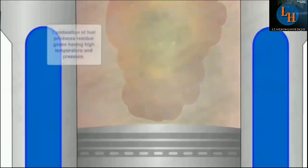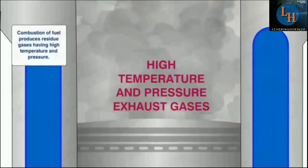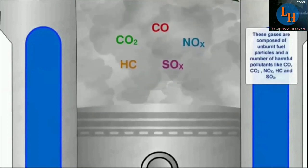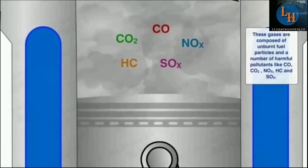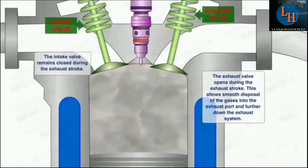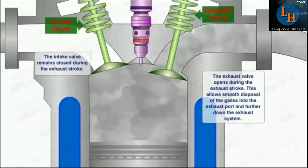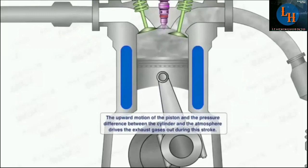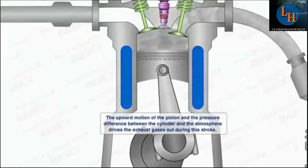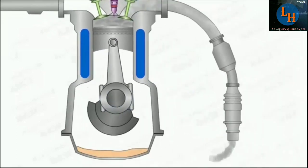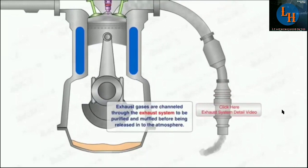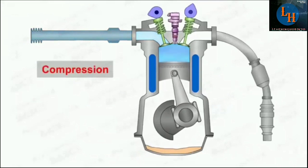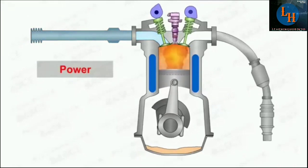The last stroke is the exhaust stroke. The burnt gases remain inside the cylinder after we have utilized the work produced. These exhaust gases are not required and contain CO2, NOx, HC, and SOx. The piston pushes these gases out through the exhaust valve to the outside, where a silencer is provided before they enter the environment. At the next stroke, new air and fuel will enter. So the four-stroke cycle repeats: intake, compression, power, and exhaust.